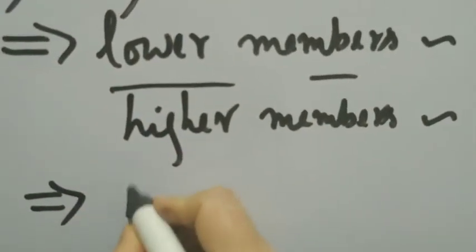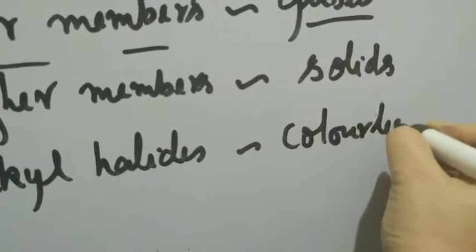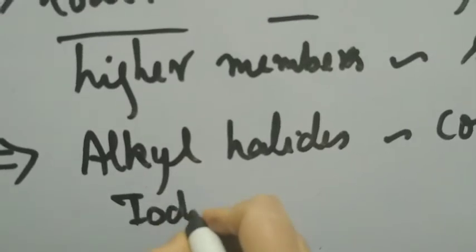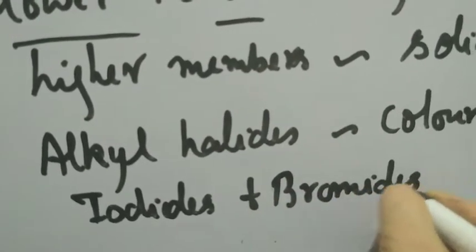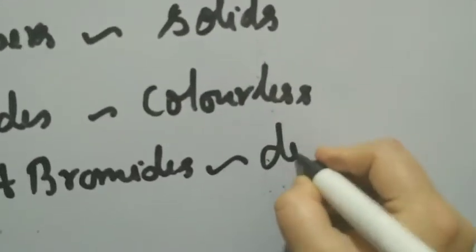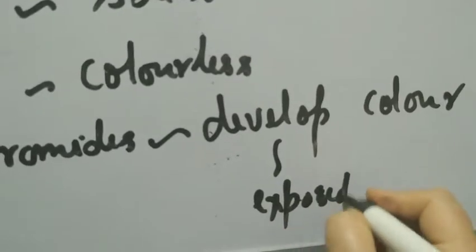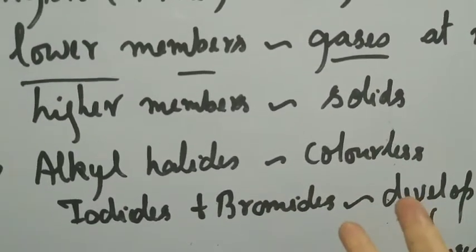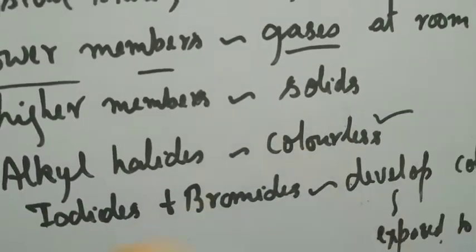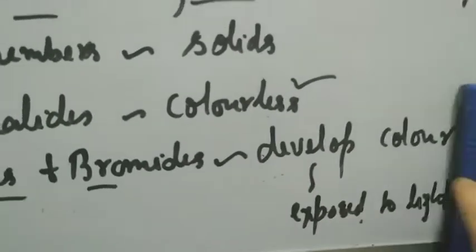Alkyl halides in general are colorless. However, iodides and bromides — under normal conditions they are also colorless — but if you expose them to light, they develop a color. Their thermal stability is lower, and when exposed to light they undergo decomposition, showing shades of brown or purple. So alkyl halides are generally colorless; iodides and bromides develop a shade of brown or purple only when exposed to light.